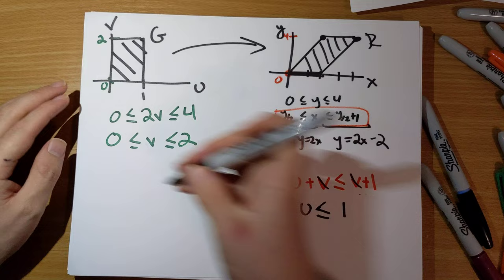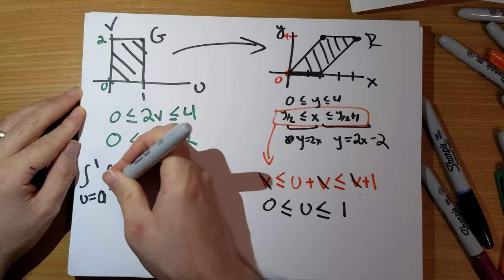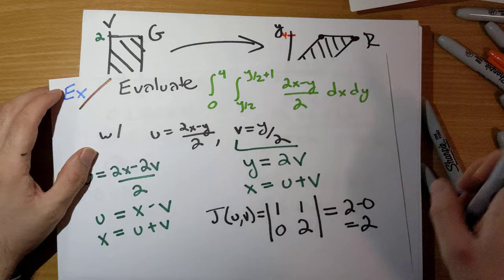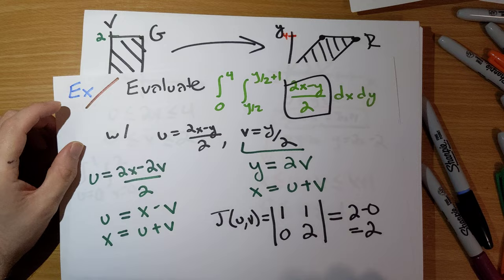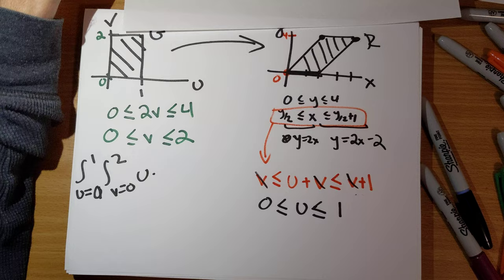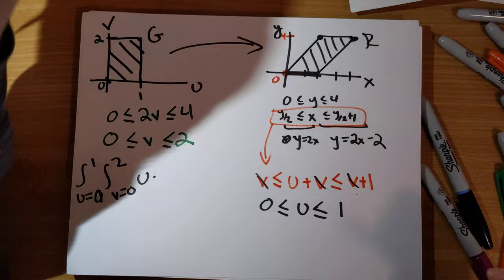Integral U runs from 0 to 1, V runs from 0 to 2. The integrand here, 2X minus Y over 2, well, that's just equal to U. And then, we throw in our factor, we throw in the factor, absolute value of the Jacobian. The Jacobian is 2, absolute value of 2 is 2.